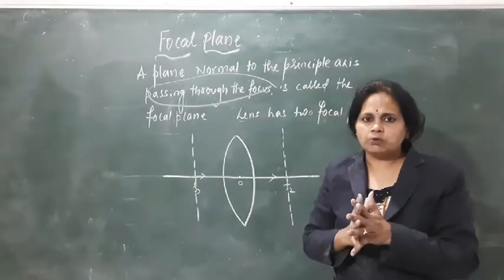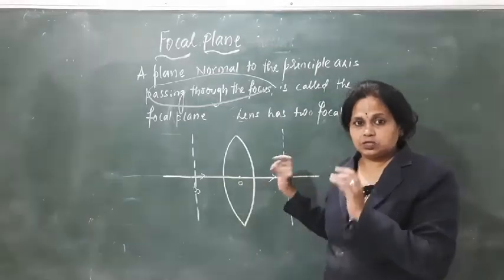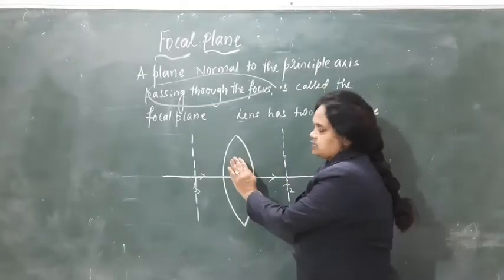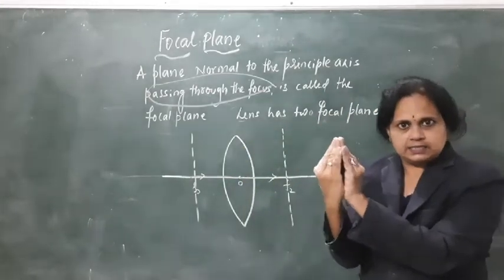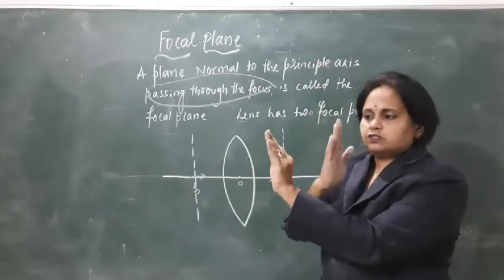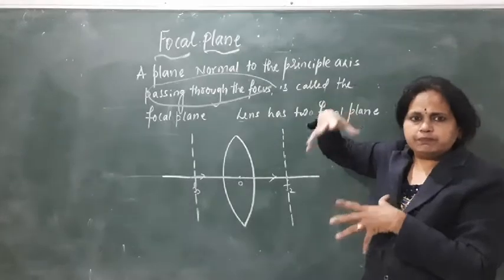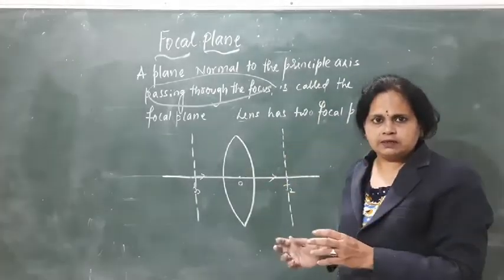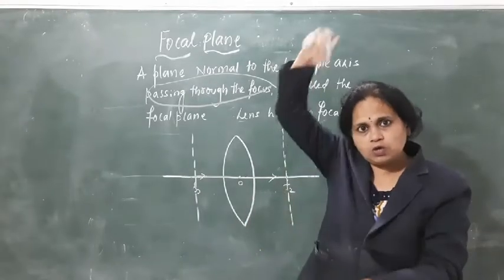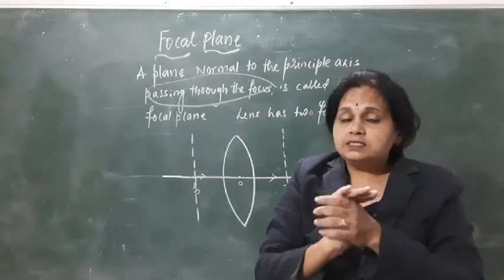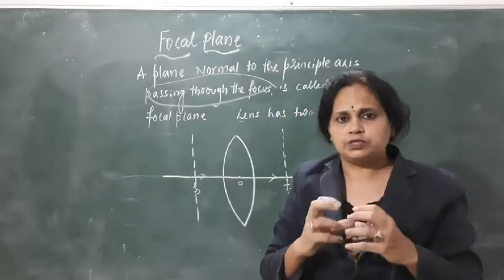One more thing you also have to visualize is that the lens is not flat. Because we cannot draw the lens in three dimensions, we are showing it like this every time. Actually the lens is placed like this in three dimensions. If the lens is like this, then the plane in front of it will also be like this. A plane is nothing but a piece of medium — let it be any medium, water or anything — which is facing towards the lens, parallel to the convex lens and passing normal through the focal point.